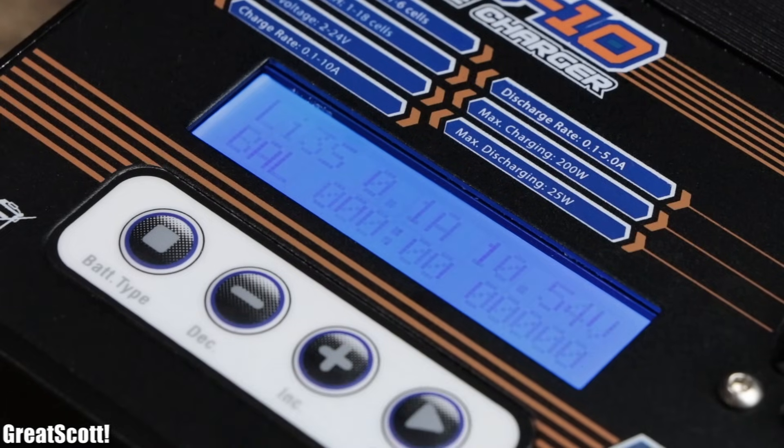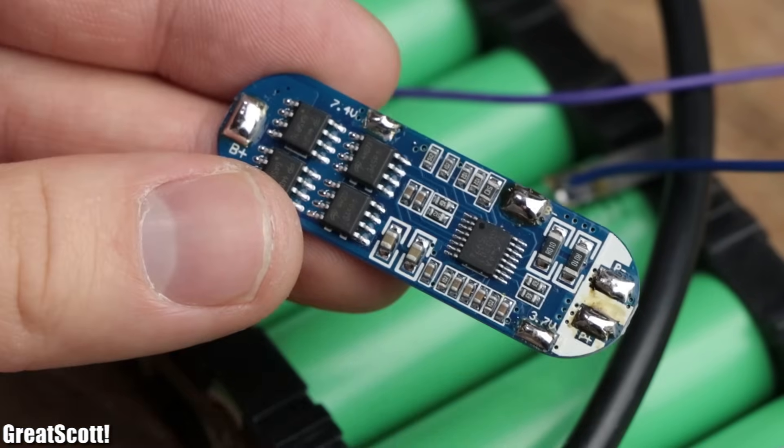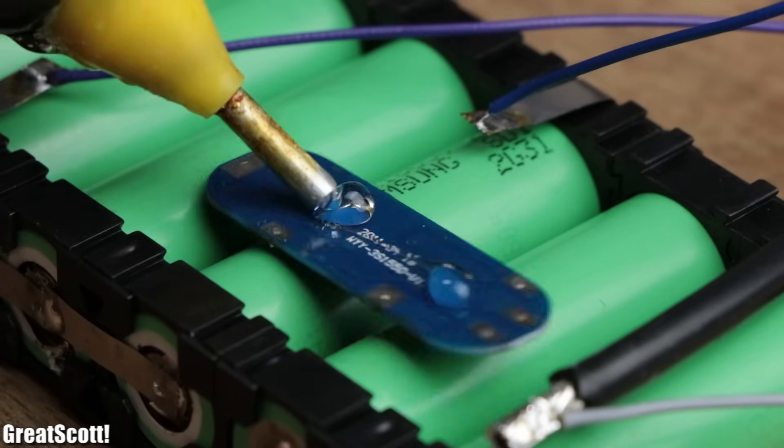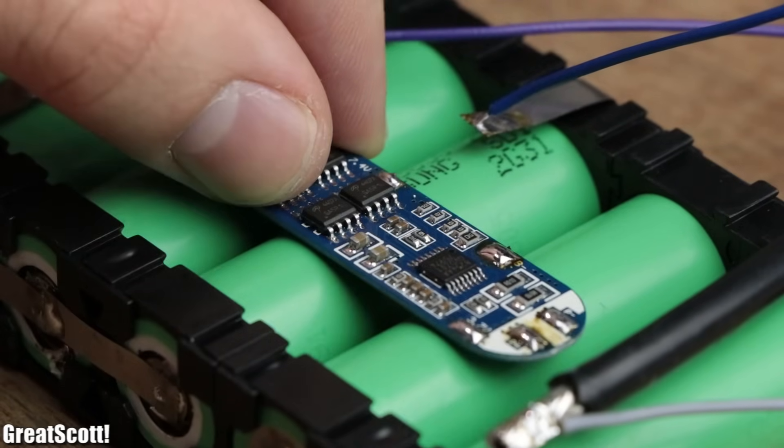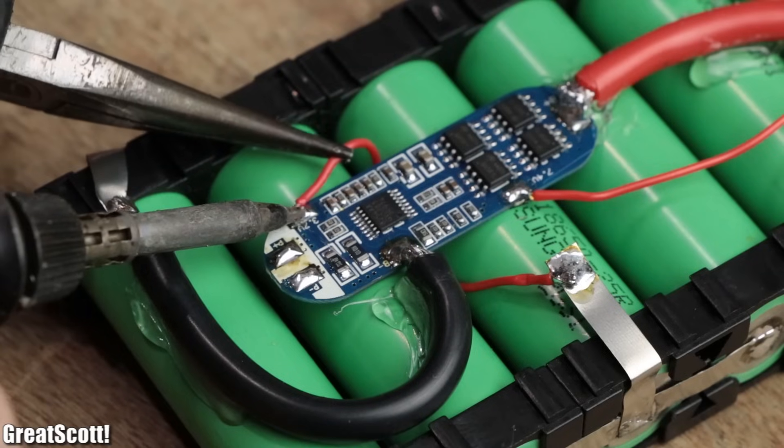But we're not finished yet because we can still add a BMS circuit to the battery pack by simply gluing it on top of the pack and soldering the battery terminal wires to the circuit according to its labels.